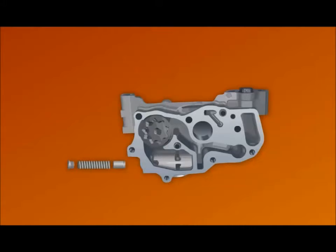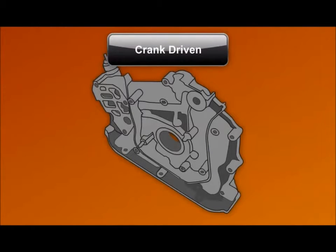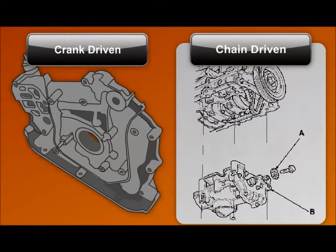The lubrication system uses a positive displacement oil pump to pressurize engine oil passages. Some pumps mount at the front of the crankshaft, while other engines drive the pump using a chain connected to the crankshaft.